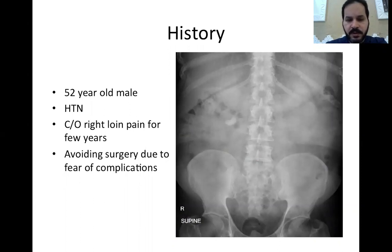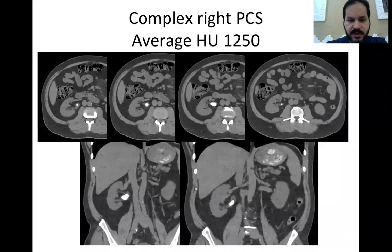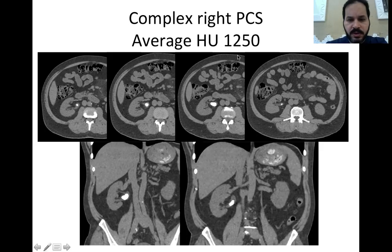My case for today is about this 52-year-old male who is a known case of hypertension. He's been complaining of right loin pain with recurrent attacks for a few years, and he's been avoiding surgery due to fear of complications, trying all kinds of herbal medications. But apparently, because of this complex right renal caliceal system and average Hounsfield unit of 1,250, this stone was not going anywhere without surgery.